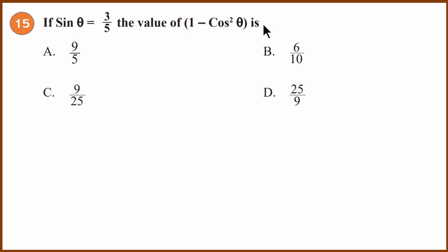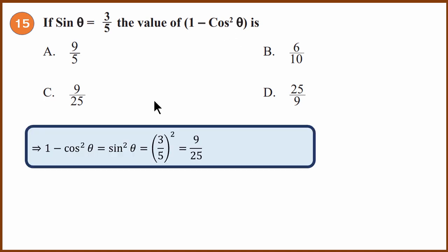Fifteenth question: if sin θ = 3/5, find 1 − cos²θ. Using the identity sin²θ + cos²θ = 1, we know 1 − cos²θ = sin²θ. So sin²θ = (3/5)² = 9/25. Use the identity and substitute directly. The answer is C, which is 9/25.